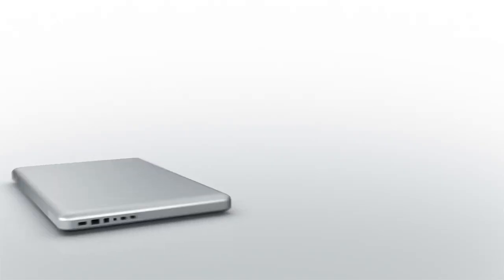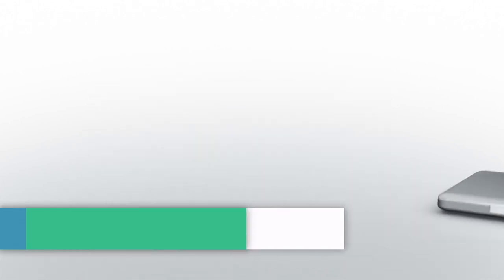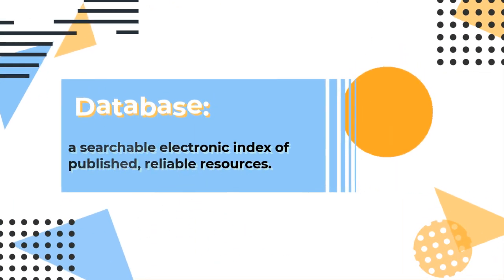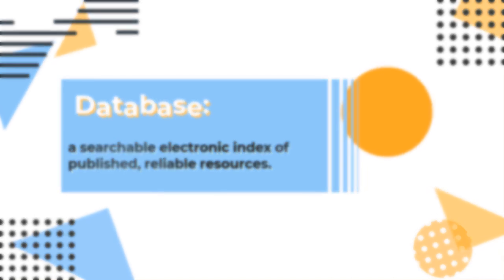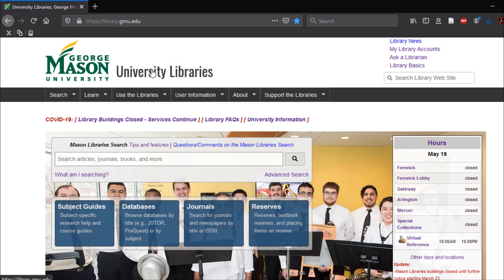Now that we understand what Boolean operators are, let's try using them in a database search. A library database is a searchable electronic index of published reliable resources. It will provide you access to a wealth of useful research materials from academic journals, newspapers, magazines, and more. Mason Libraries offers an extensive database resource list.